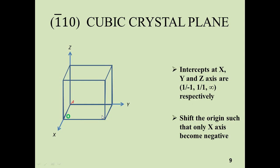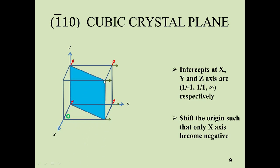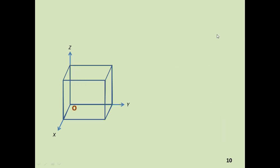The four negative x-axis directions are: this one, this one, this one, and this one. The four positive y-axis directions are: this one, this one, this one, and this one. Once again you get two types of corners: two corners which have two arrows, and four corners that have a single arrow. Join these four single-arrow corners; you get a rectangle and that rectangle is the (1̄10) cubic crystal plane.